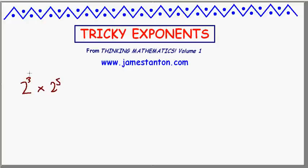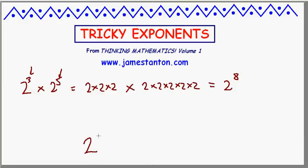2 cubed times 2 to the 5th. When these are positive whole numbers, I feel I have no trouble making sense of that. 2 cubed is 2 multiplied by itself 3 times. And then I wish to multiply that by 2 multiplied by itself 5 times. And it's very obvious I now have 2 multiplied by itself 8 times. So at least for positive whole numbers, 2 to the a times 2 to the b should be 2 to the a plus b.